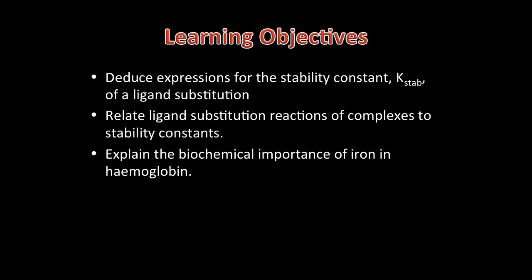The learning objectives for this lesson are to be able to deduce expressions for the stability constant, understand the relevance of the magnitude of the stability constant and carry out related calculations. Finally, you need to be able to explain the biochemical importance of haemoglobin as an example of a transition metal complex.